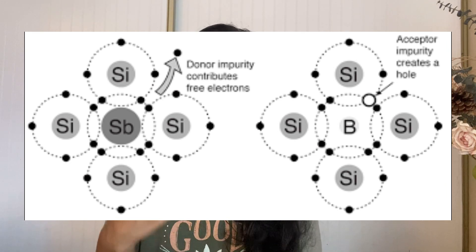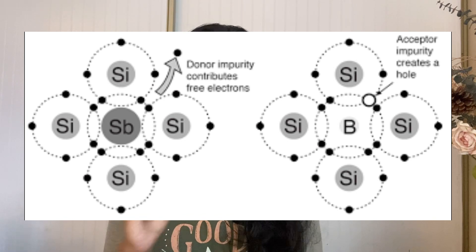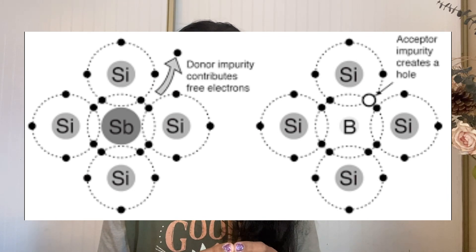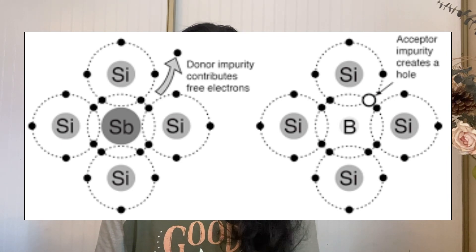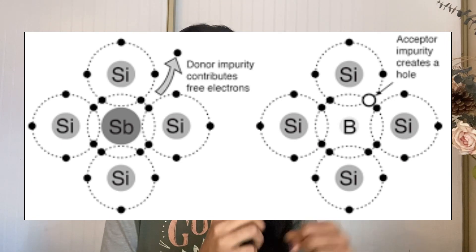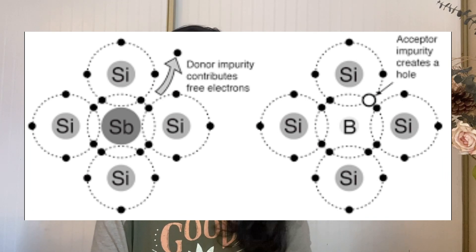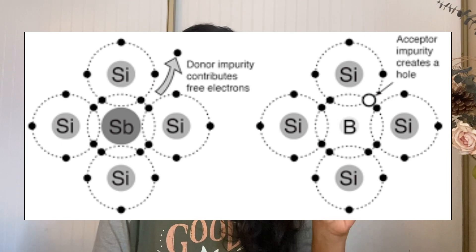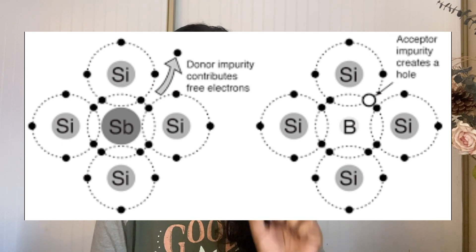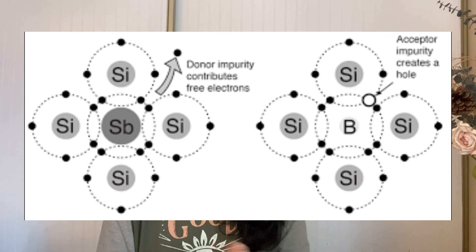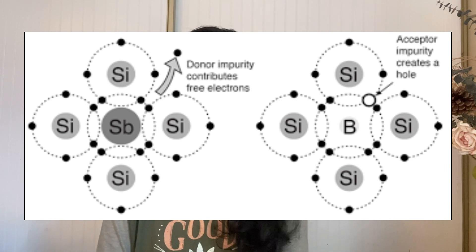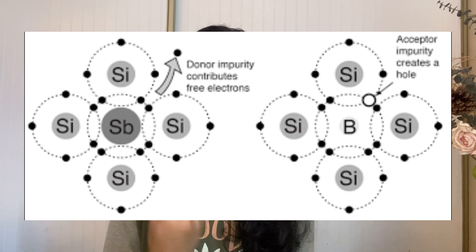Trivalent means tri — three — so three valence electrons in the outer shell. When you take a silicon atom, it has four valence electrons in the outer shell, and it requires four other nearby valence electrons to form a complete pair of covalent bonding. But when we take a trivalent impurity, an atom of a trivalent impurity has only three electrons, so there is a deficiency of one electron. Therefore, addition of trivalent impurity will create holes — a vacancy of electrons will be created.